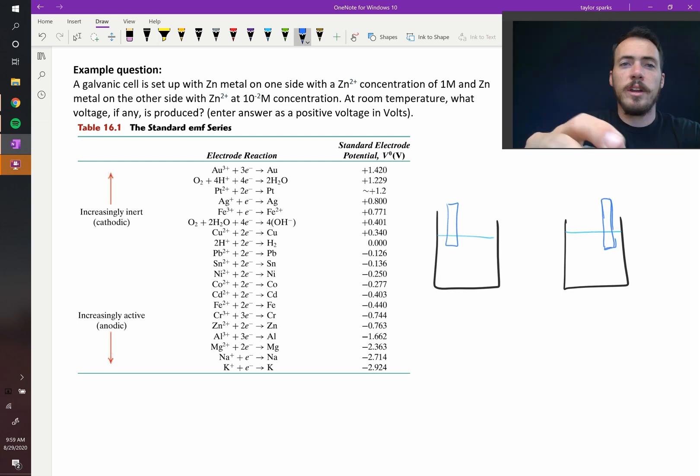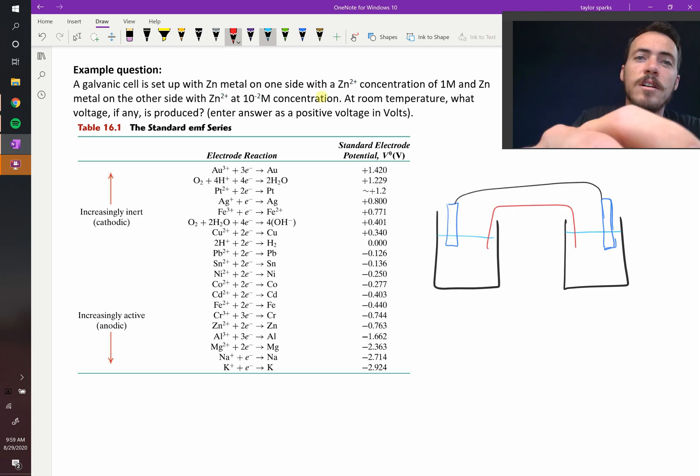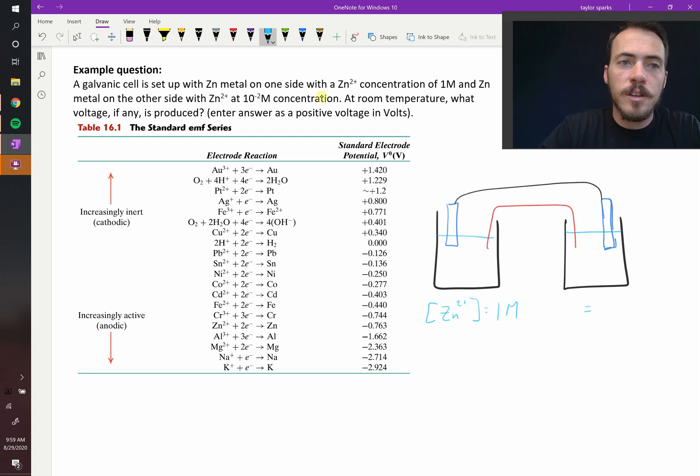But the difference between these two galvanic cells, obviously they have to be attached electrically, you have to have a salt bridge between them, but the difference between these is the concentration of zinc ions. So here, the concentration of our zinc ions, zinc two plus ions, is equal to one molar, but here it's equal to ten to the minus two molar, so it's much more dilute.